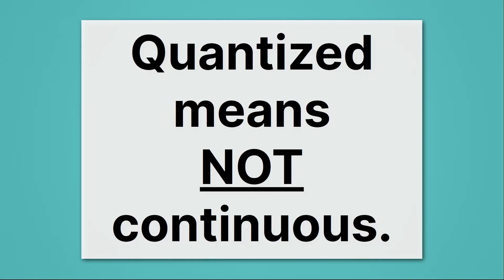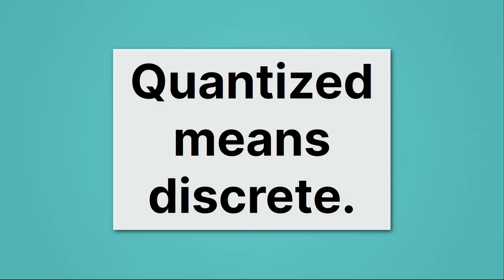Well, quantized means not continuous. So instead of going smoothly from one speed to another, we have these hops, skips, and jumps. Quantized means discrete.